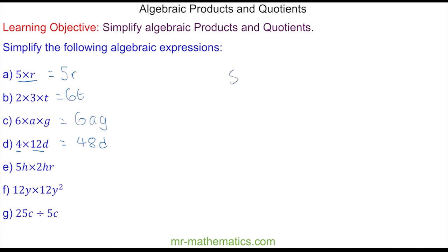For question e, 5h times 2hr. We have 5 times 2 to make 10. h times h is h squared. And we have the r term.